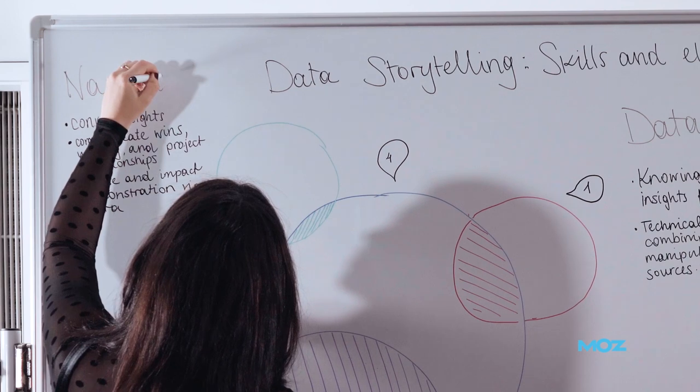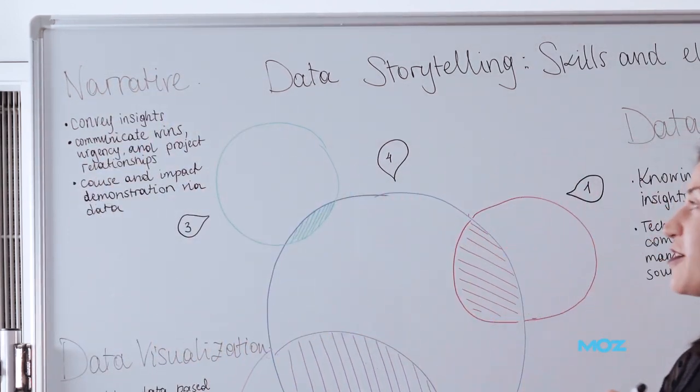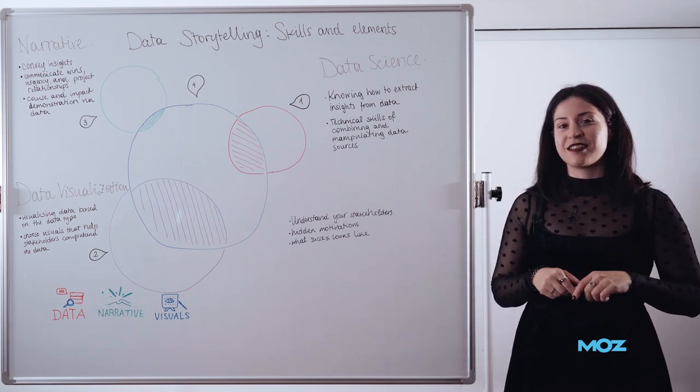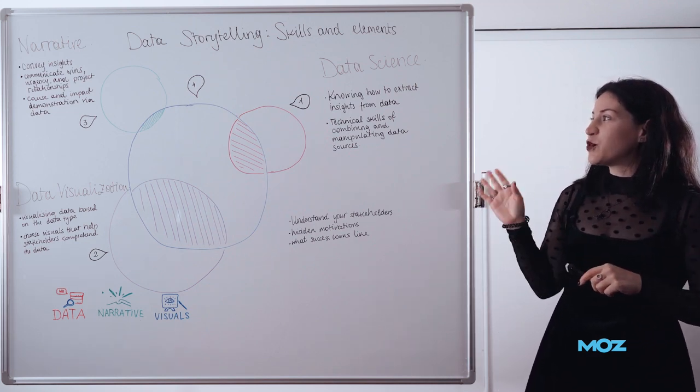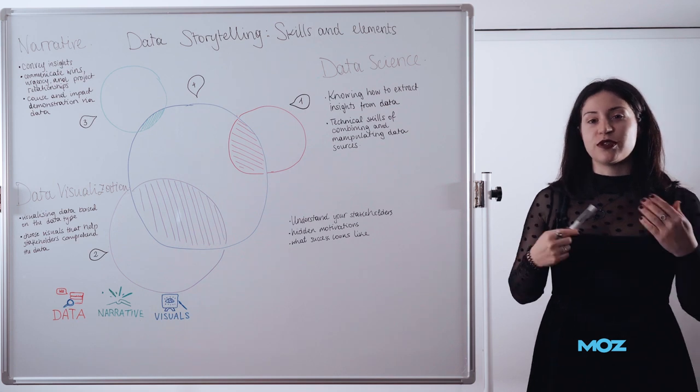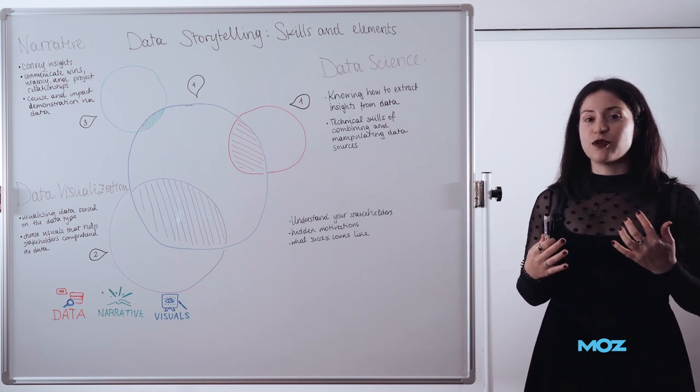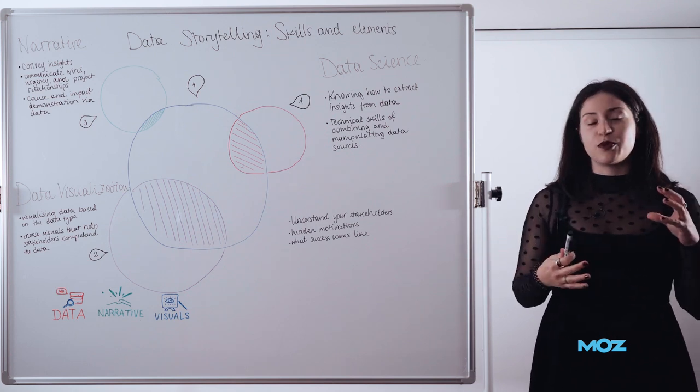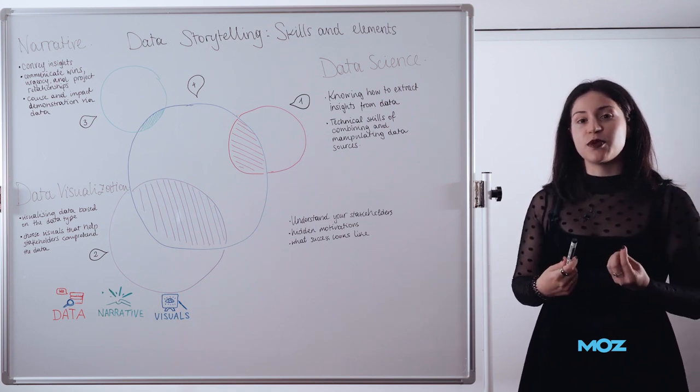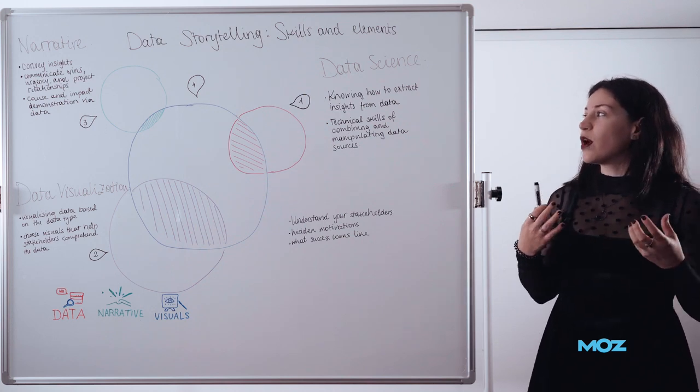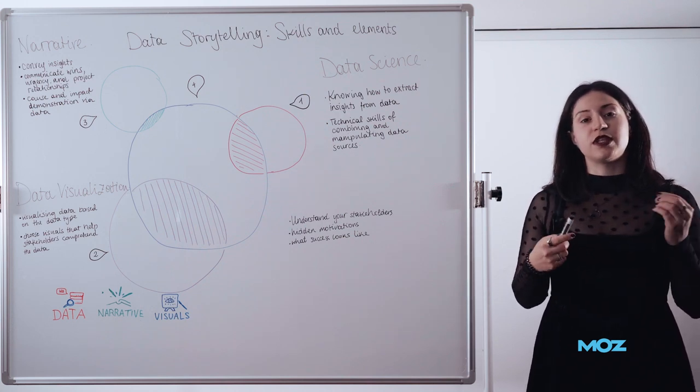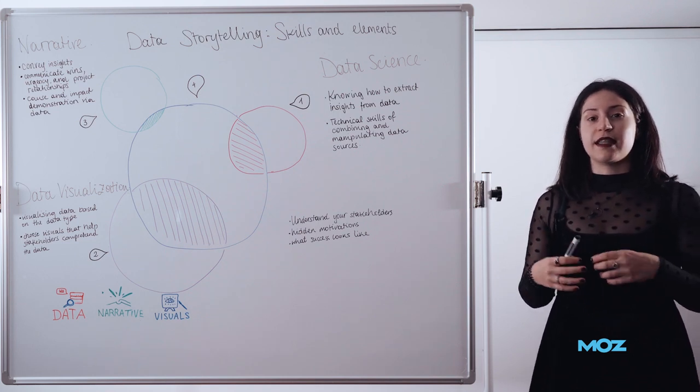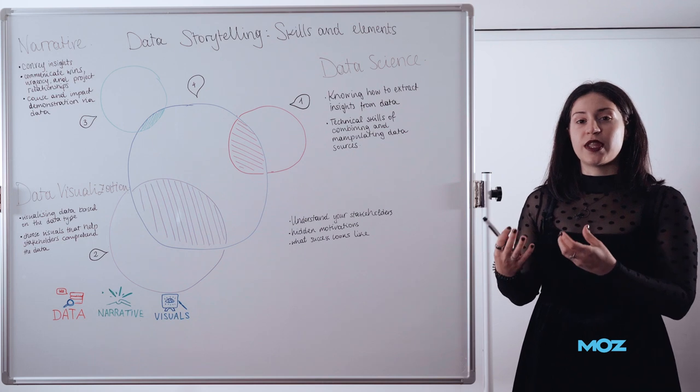The third component is the narrative. So the narrative is all about how do you convey insights to your audience. What is most important here is that you learn how to communicate wins, how to evoke emotions in your stakeholders, how to maybe create some urgency with the stories that you are saying, and also how to communicate the relationships between the projects that you are working on and the outcomes that you are seeing within the data.